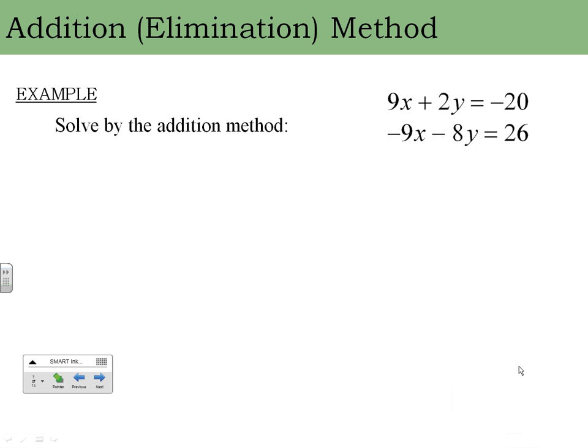The next way to solve systems of equations with two variables is called either the addition method or the elimination method, depending on your teacher or book. Either way, it's the same method. Here's a system of equations, and what we're trying to do is add these equations together in a way that will cancel out one of the variables.